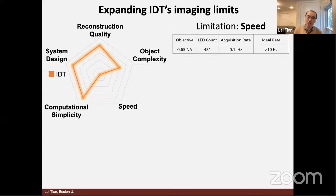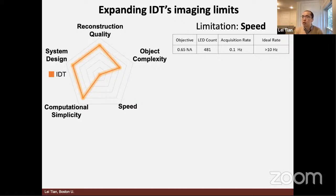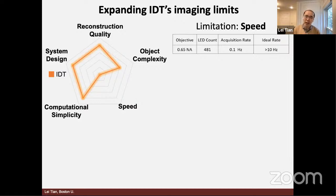Based on this initial development about four years ago, we observed a key limitation with what we have achieved so far. In our application for designing this kind of microscope, we care about five different parameters: system design simplicity, reconstruction quality, object complexity, imaging speed, and computational simplicity. In particular, I'm going to talk about this issue of speed. In the technique I just described, just like the movie shown earlier, it involves quite a bit of scanning of illumination angles — although I claimed it's simple, it actually takes quite a bit of time.